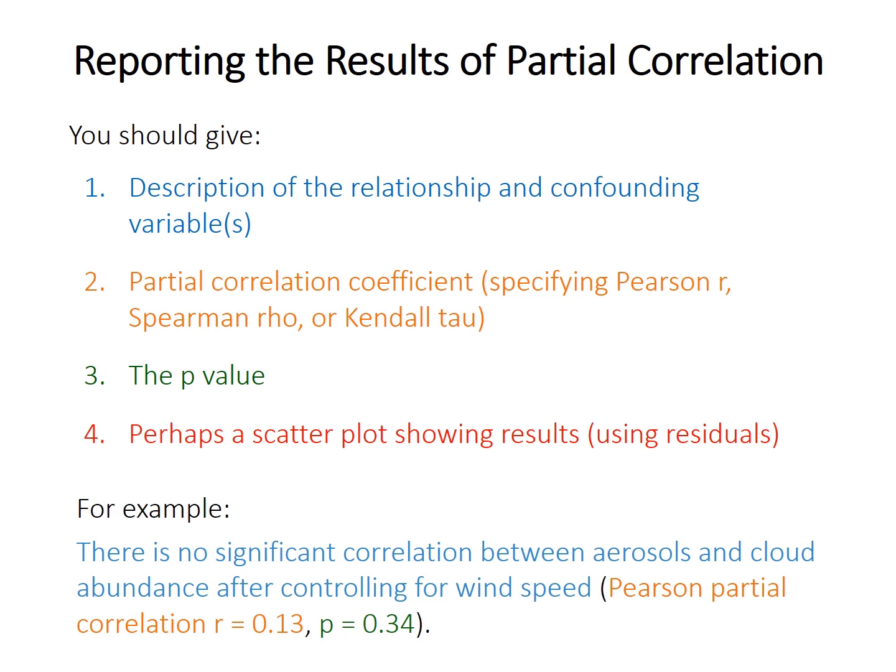Here's an example of how you might phrase the results: 'No significant correlation between aerosols and cloud abundance after controlling for wind speed' — that's the confounding variable. You would report the Pearson partial correlation result with an r value and a p-value, for example.